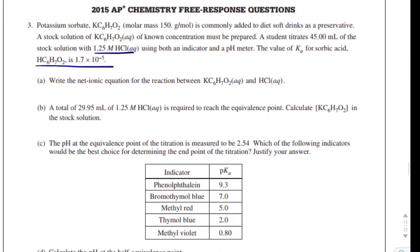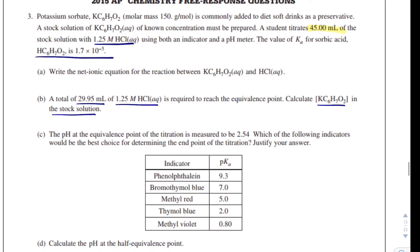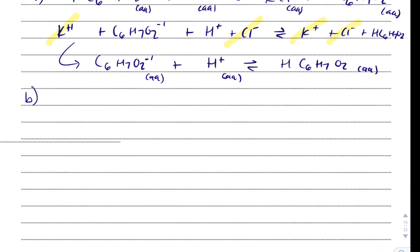And question B, it says a total of 29.95 milliliters of 1.25 molar HCl is required to reach the equivalence point. Calculate the concentration of potassium sorbate in the stock solution. So the stock solution was 45 milliliters. So hopefully an equation comes to mind, and that equation is MAVA equals MBVB.